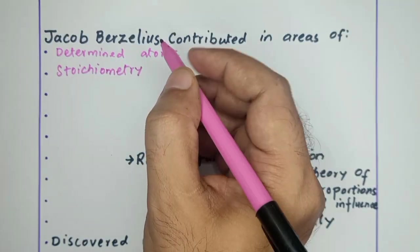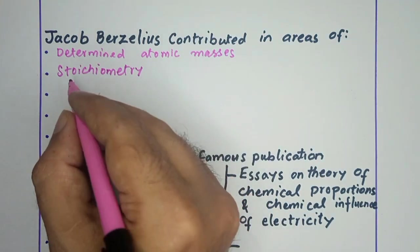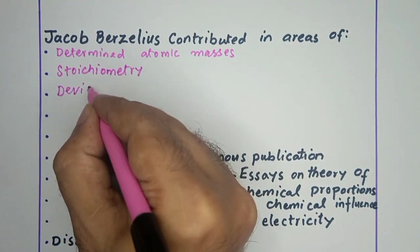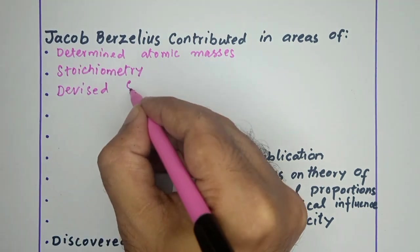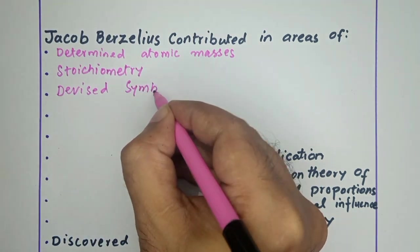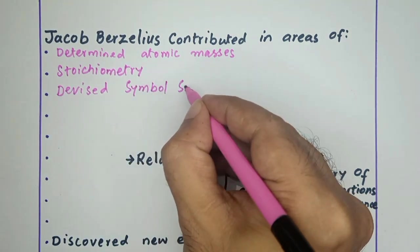Very important, Jacob Berzelius devised and developed a symbol system of elements.